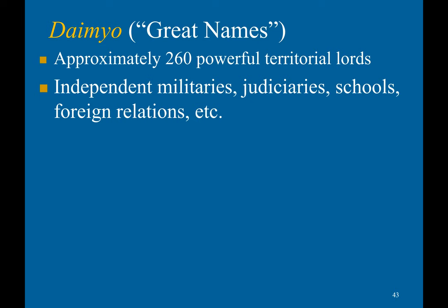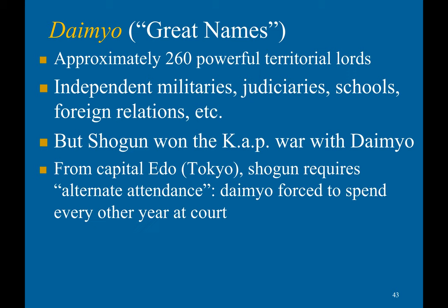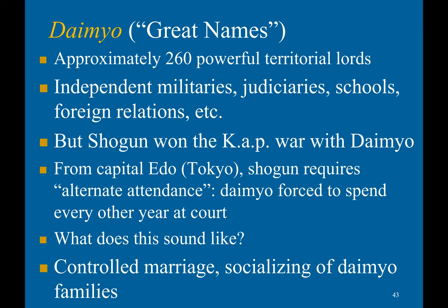Below the Shogun were approximately 260 daimyo — powerful territorial lords with their own independent militaries, judiciaries, schools, and foreign relations. The Shogun eventually brought the daimyo under control. From the capital Edo, the Shogun required alternate attendance: the daimyo were forced to spend every other year at court — reminiscent of King Louis XIV and the nobles at Versailles. The Shogun also used controlled marriages and socialization of daimyo families to maintain control.